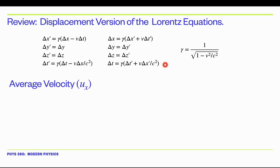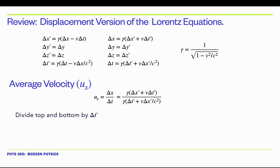The simplest way to find the transformation equations is to go back to the definition of average velocity. We'll use the displacement equations to calculate what delta x and delta t are in terms of the prime coordinates. We plug in for delta x and delta t. Notice that the gammas are going to cancel out. If we divide the top and the bottom by delta t prime, we'll have delta x prime over delta t prime. This delta t prime will just go away, and this delta x prime will become delta x prime over delta t prime.